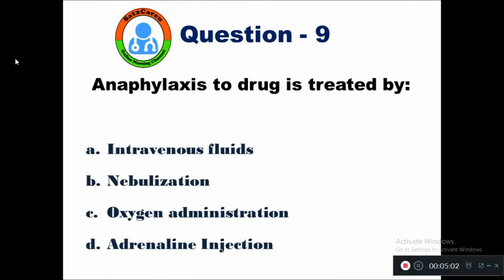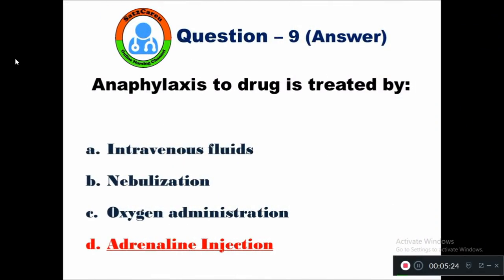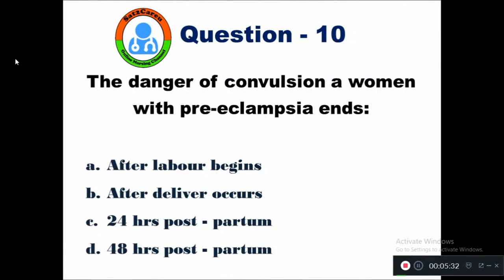Question 9: Anaphylaxis to a drug is treated by — option A intravenous fluids, B nebulization, C oxygen administration, D adrenaline injection. Anaphylaxis to a drug is treated by adrenaline injection, which is used to treat any anaphylactic reaction. Question 10: The danger of conversion in a woman with preeclampsia ends — option A after labor begins, B after delivery occurs, C 24 hours postpartum, D 48 hours postpartum.